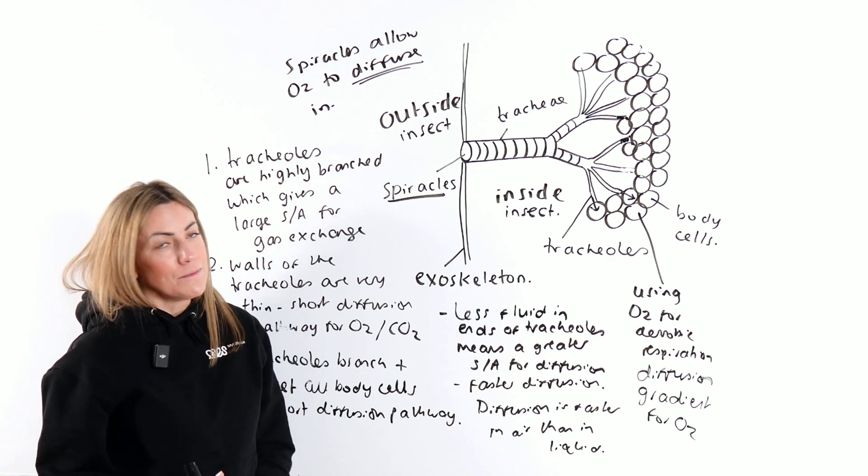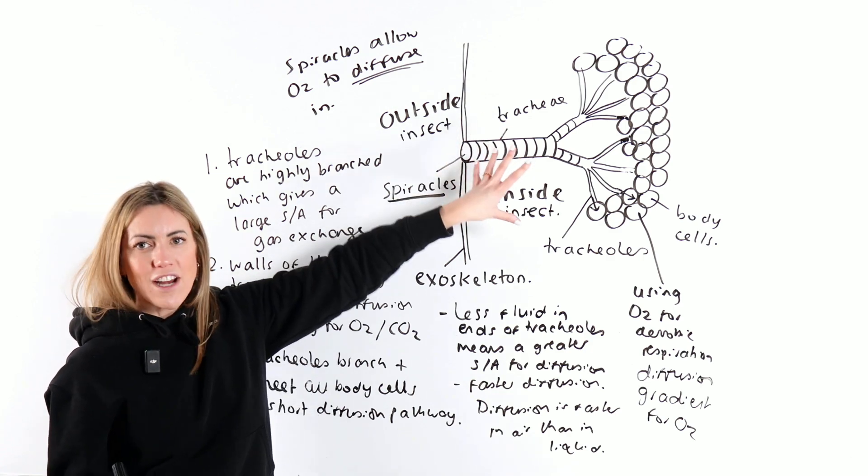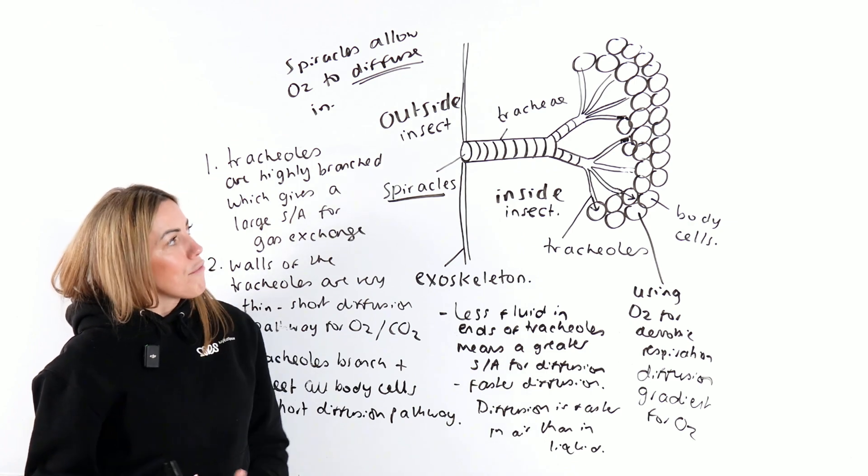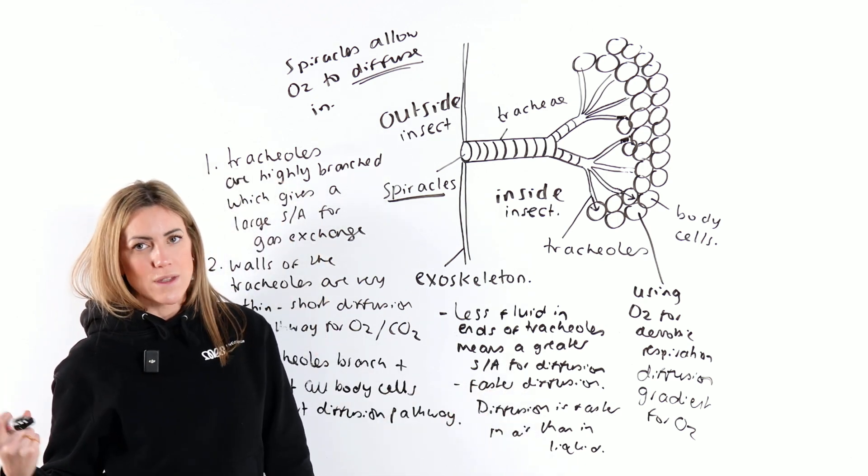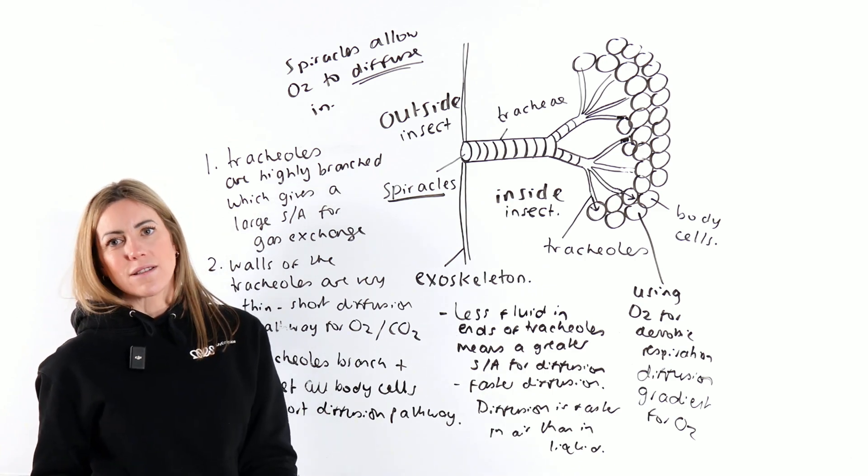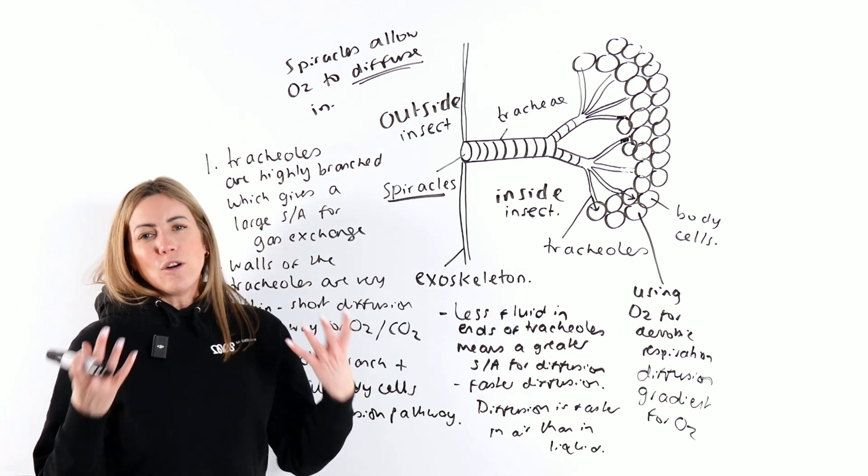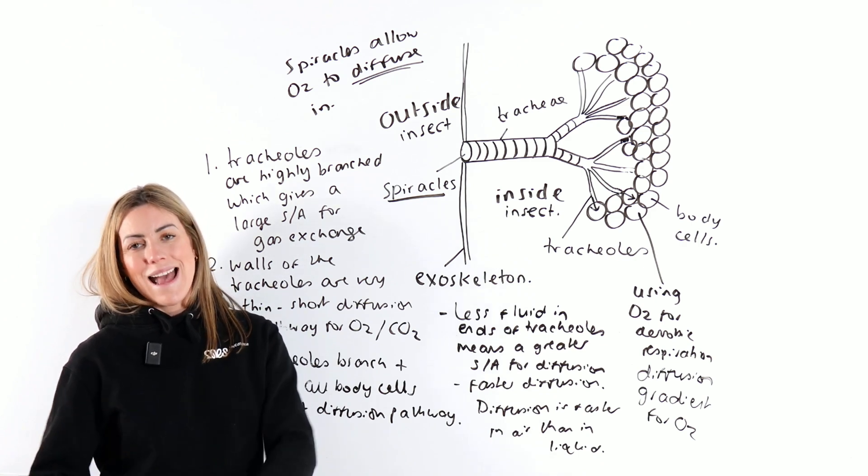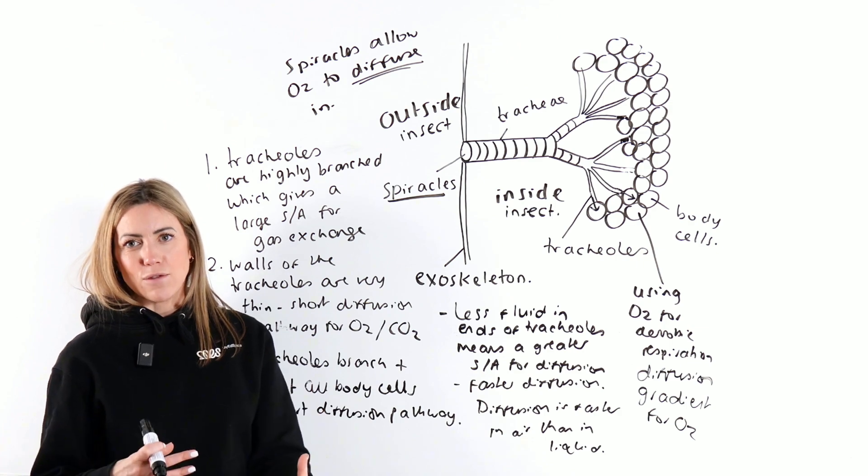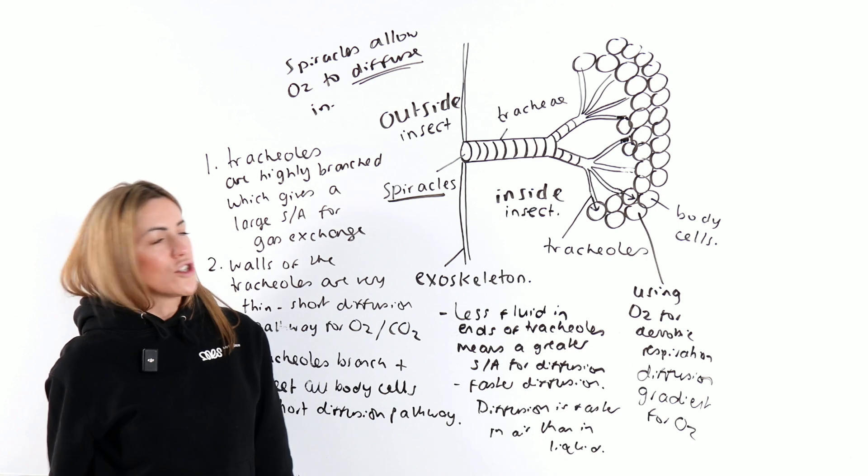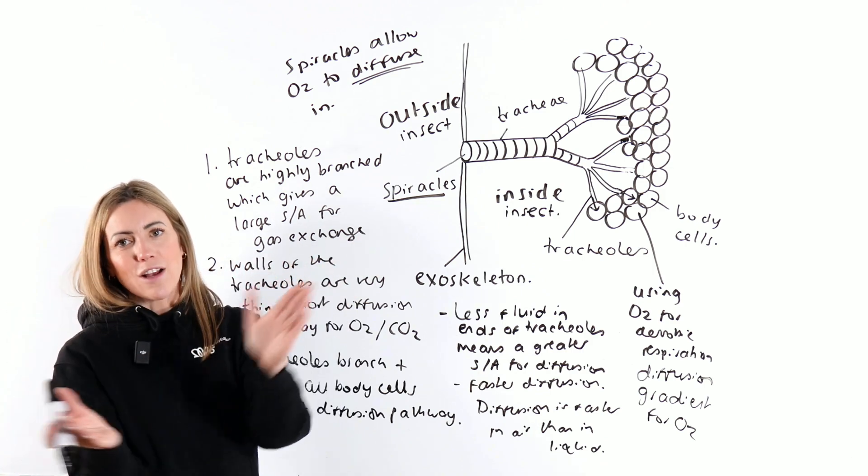You don't need to know it in that much detail, but it might just be worth remembering abdominal pumping. It can change the pressure in this network of branches and basically leads to drawing air in and pushing air out, as opposed to it just moving down its concentration gradient. Instead, it's going to push the air in, force the air out. Ultimately, abdominal pumping helps maintain a concentration gradient for oxygen and CO2, because it's going to bring more air in with a higher concentration of oxygen and push out the air with a higher concentration of CO2. So it's maintaining the concentration gradient.